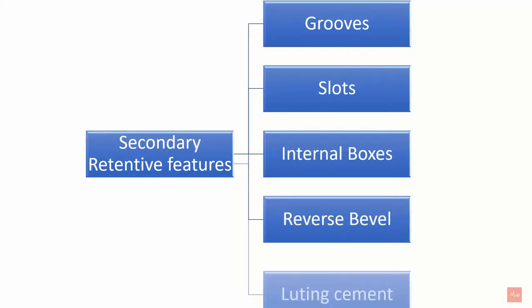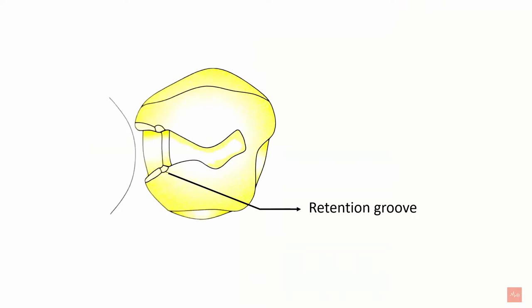The secondary retentive features are grooves, slots, internal boxes, reverse bevel, and luting cement. First are grooves — retention locks placed on the vertical walls of the cavity are known as retention grooves. In the picture you can see the retention groove is placed on the vertical wall of the cavity in the proximal box. These are usually placed in teeth with sufficient height.